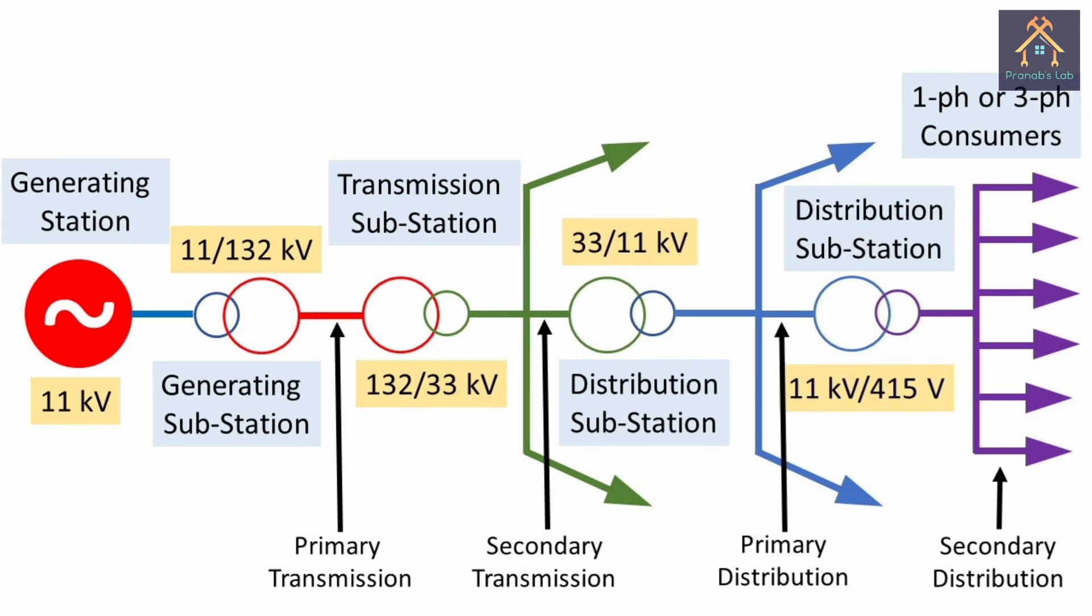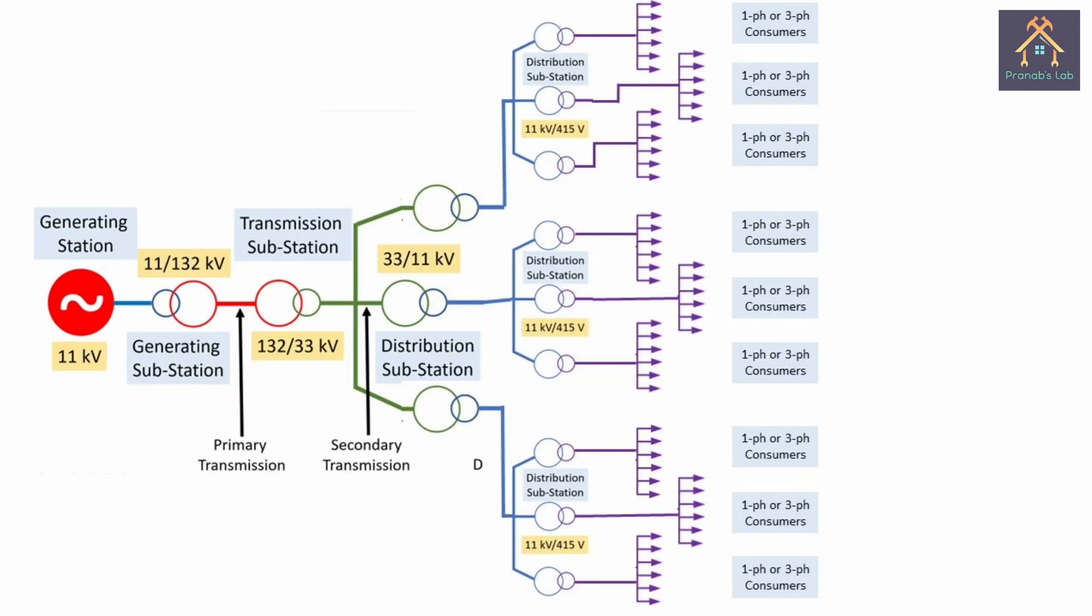So, this is the single line diagram from generating station to our house and now you can see this is the actual working single line diagram. Thus the power is distributed from generating station to the single phase or three phase consumer.